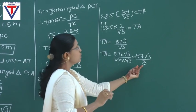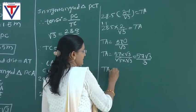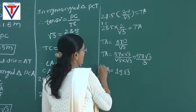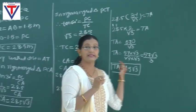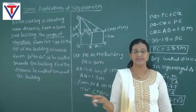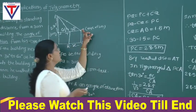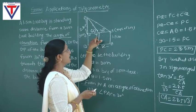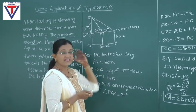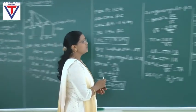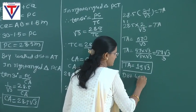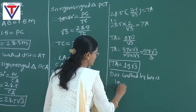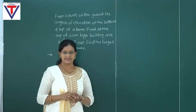Root 3 times root 3 equals 3. Dividing 57 by 3 gives 19. So TA is equal to 19 root 3. The boy's initial position was AB, and he moved to position T, so the distance walked by the boy is 19 root 3 meters. Let's consider another example.